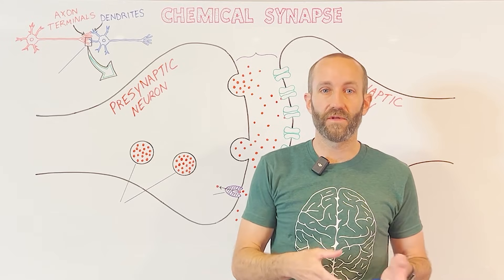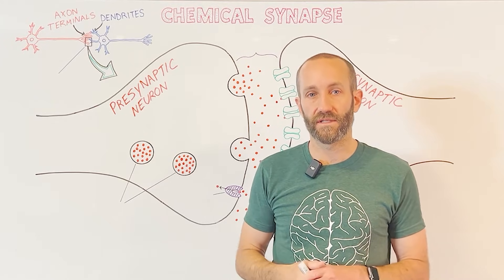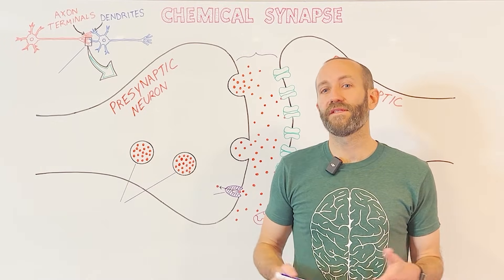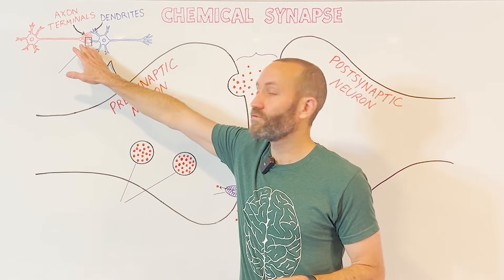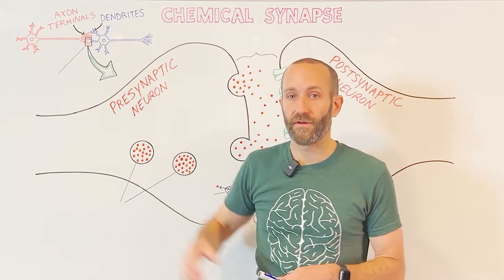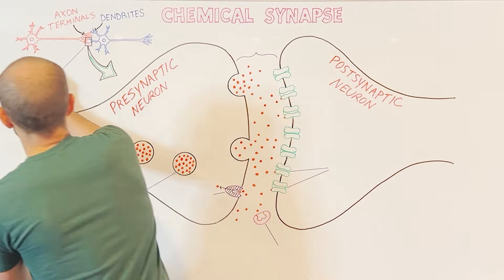Those chemical signals are called neurotransmitters, and they're released at chemical synapses. Most of the time a synapse is formed between the axon terminals of one neuron and the dendrites of another. These are called axodendritic synapses.